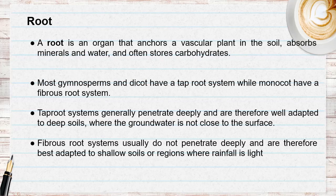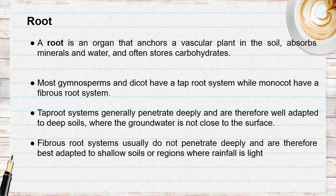The root is an organ that anchors a vascular plant in the soil. It helps to hold the plant in the soil, absorb minerals and water, and sometimes stores carbohydrates. There are two types of root systems: gymnosperms and dicots have the tap root system, while monocots have a fibrous root system.